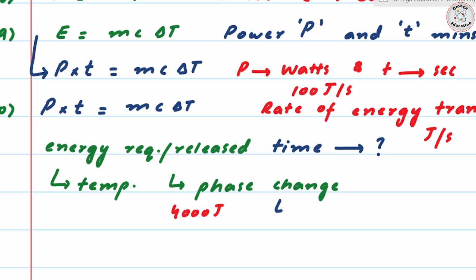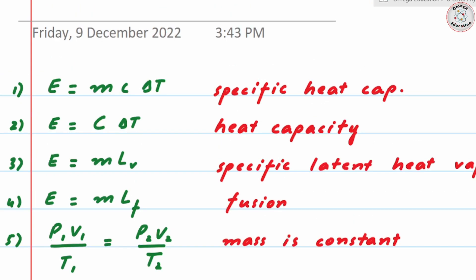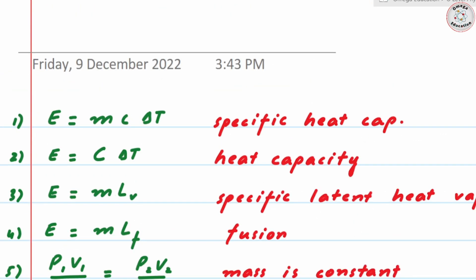You divide that required energy by the rate of energy transfer. And what does that give you? It'll give you the time in seconds in which that process of transfer of energy would be completed. So this is a variation and you mainly get this question in paper one in MCQs. These are the set of formulas that you can use for thermal physics.